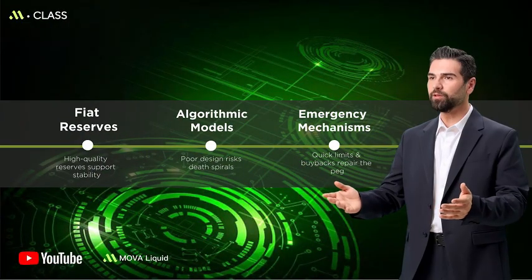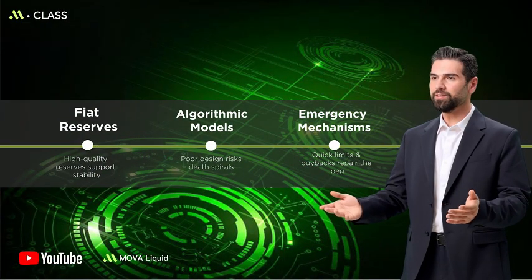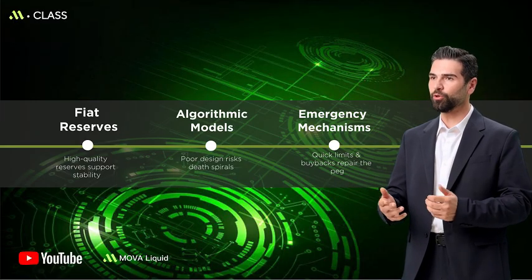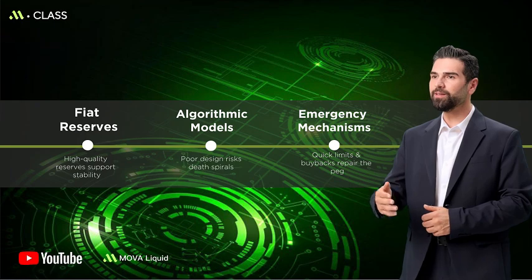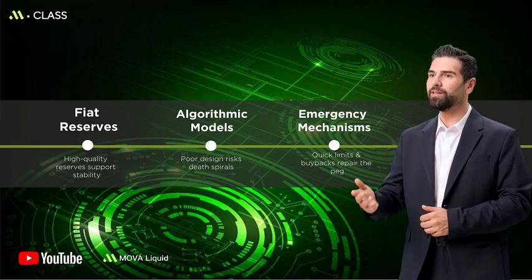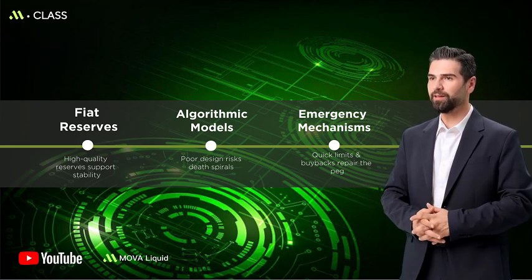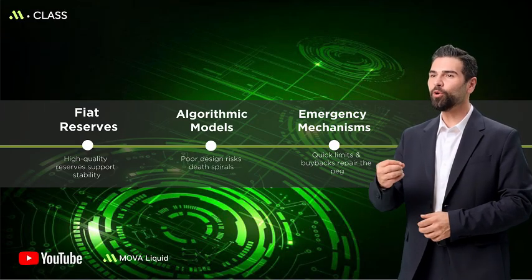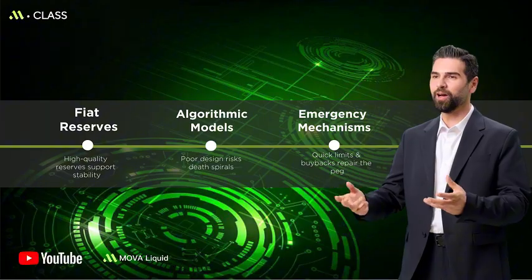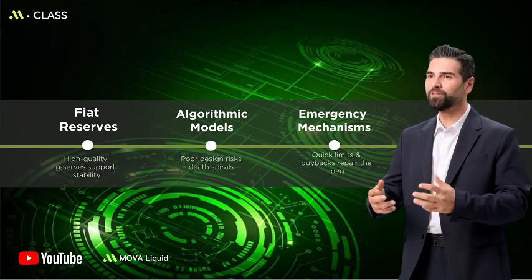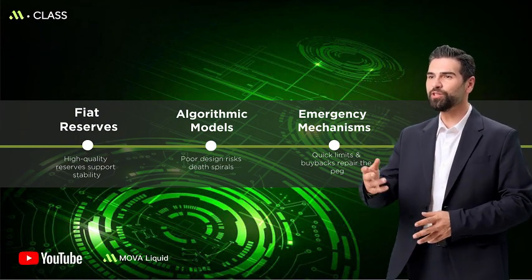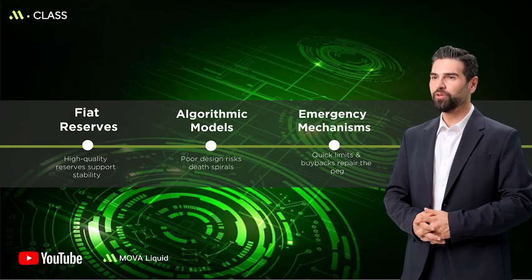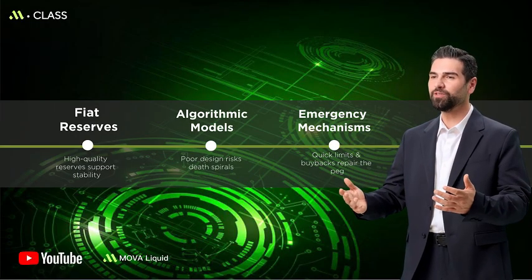A practical evaluation can follow this checklist. Identify the model — does it rely on reserves, collateral, or algorithms to maintain the peg? Verify reserve quality, duration, and liquidity. Check for independent audits and whether disclosures are on-chain or externally verifiable. Evaluate the redemption process, especially whether parameters or permissions can adjust quickly under stress. Review historical de-peg events and how the system recovered.